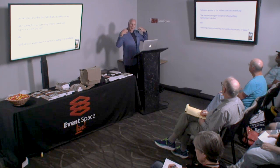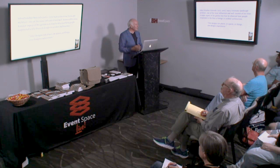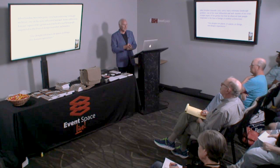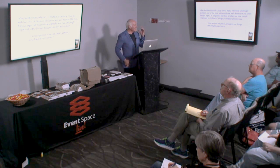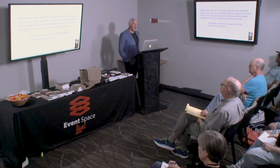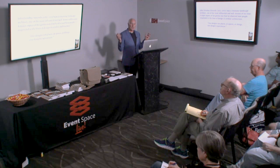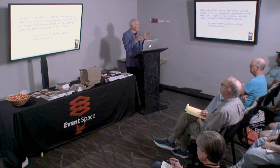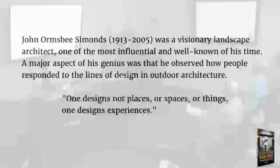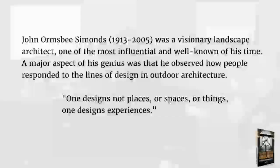The way I actually found these mood lines was not from a photographer, not from a painter, but from a landscape architect. His name is John Ornsby Simmons. He was a visionary landscape architect, and what he did was he found out that certain designs made people feel a certain way. When he used those designs, he developed what he called mood lines that we can use in photography. He says, one designs not places or spaces or things — one designs experiences. That was his goal: how can I have people come here and feel a certain way?